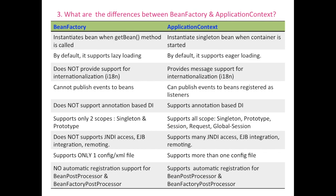Bean Factory cannot publish events to beans, whereas Application Context can publish events to beans registered as listeners. Bean Factory does not support annotation-based DI, whereas Application Context supports annotation-based DI. Bean Factory provides only two bean scopes — singleton and prototype — whereas Application Context supports all bean scopes: singleton, prototype, request, session, and global session.